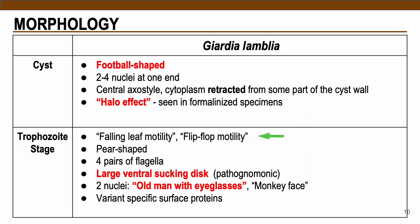In terms of the trophozoite — the motile stage of the parasite — we expect to observe the motility of Giardia lamblia. These exhibit falling leaf motility or flip-flop motility. In terms of their shape, this is pear-shaped or pyriform with 4 pairs of flagella. The most diagnostic part of this trophozoite stage is the presence of a large ventral sucking disc, which is pathognomonic — diagnostic and very unique to the trophozoite of Giardia lamblia. The presence of this structure helps Giardia lamblia to be pathogenic.